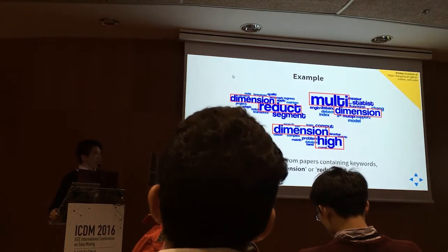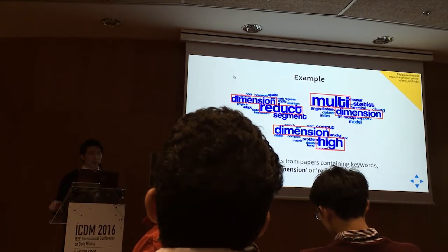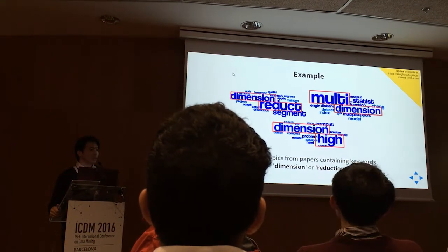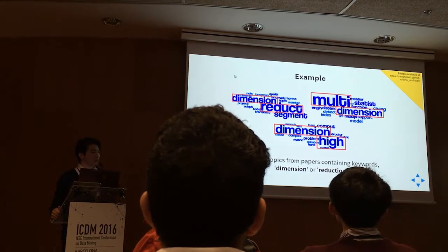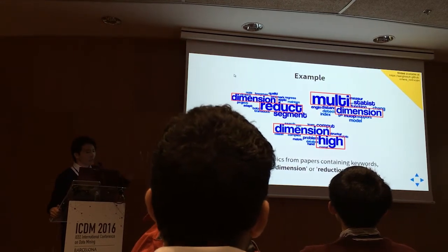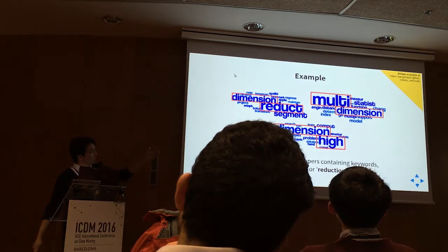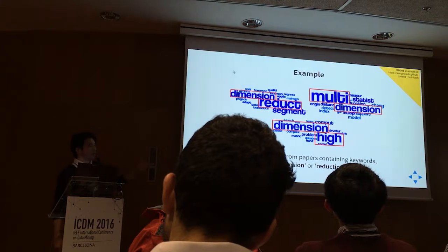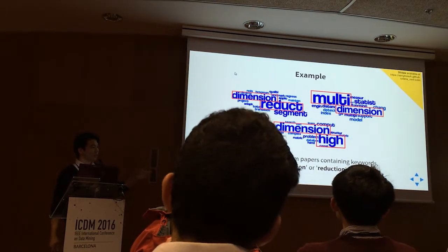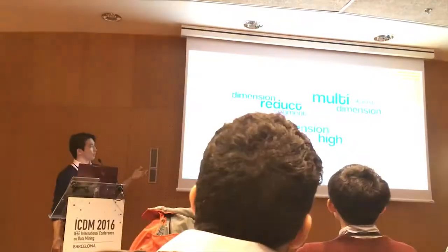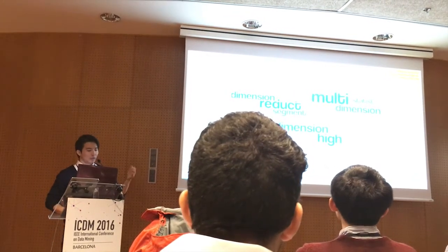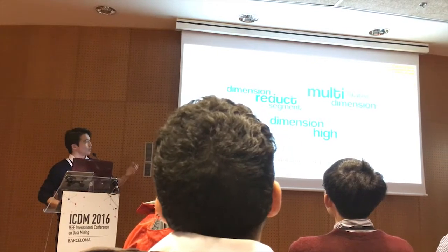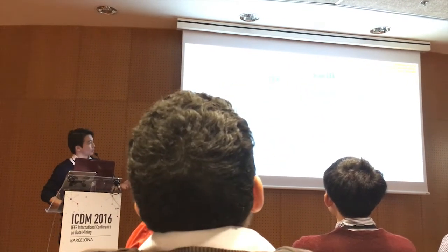Looking at a real and more relatable example, these are sampled topics from data mining papers containing keywords dimension or reduction. As you can see, the dominant keywords are dimension reduction, multi-dimension, and high dimension, which does not really provide any additional information but just repeats what we're looking for. This shows how a global topic discovery approach does not really yield a satisfactory result.